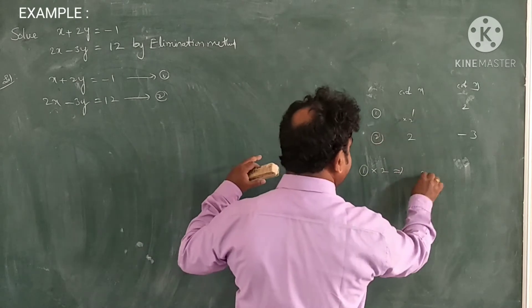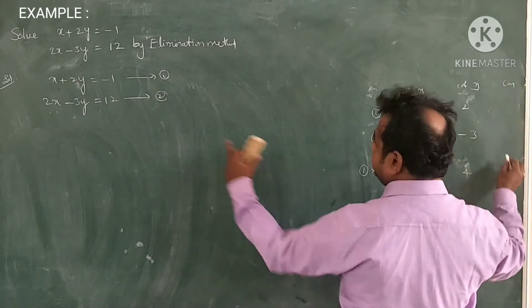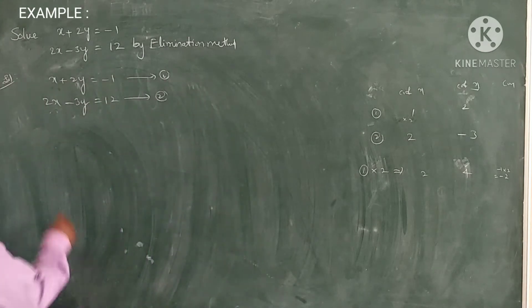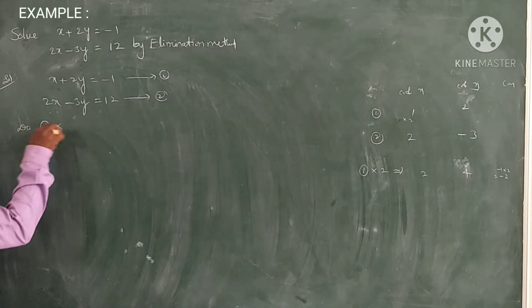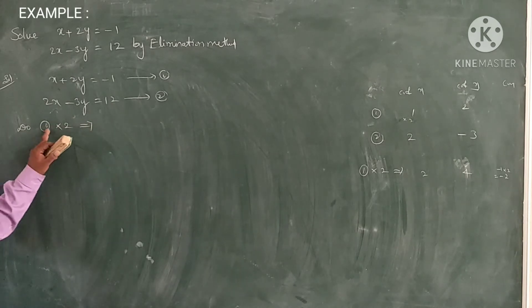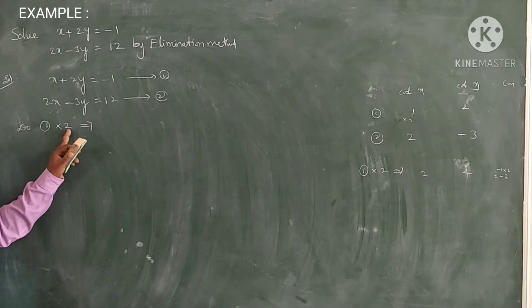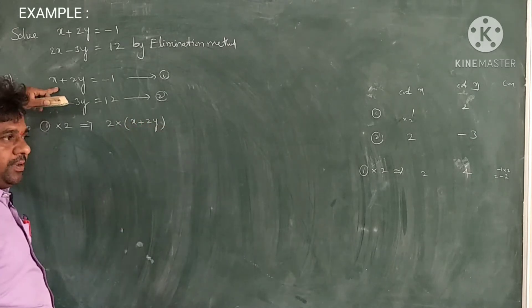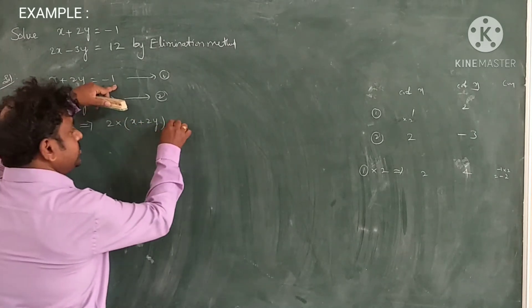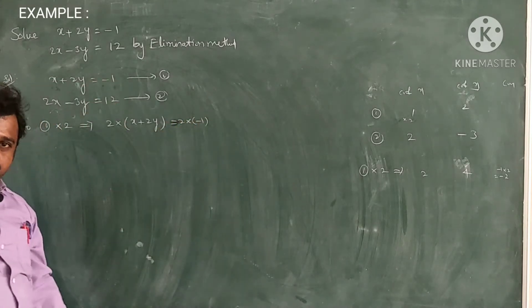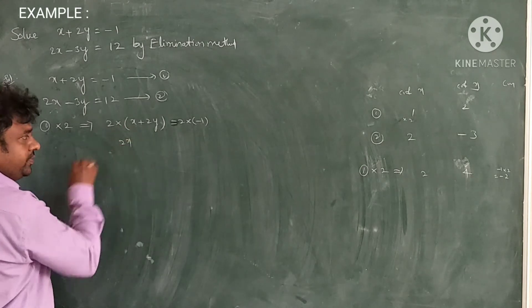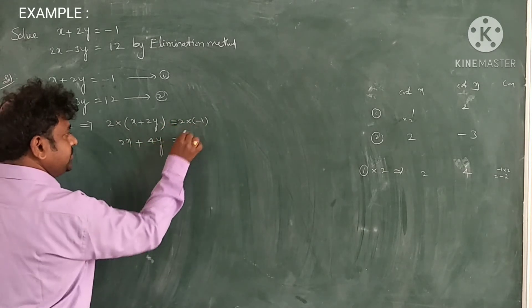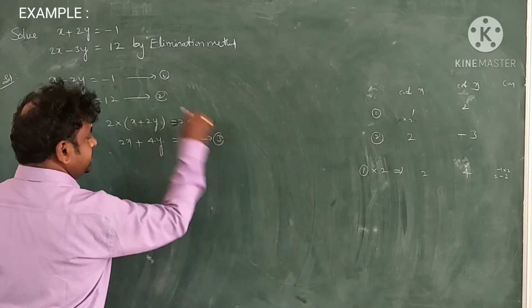Observe here: 1 times 2 is 2; 2 times 2 is 4; and the constant is minus 1, so minus 1 into 2 is equal to minus 2. So, equation 1 multiplied by 2 gives: 2 times equation 1, which is 2 into x plus 2y equals 2 into minus 1. That gives 2x plus 4y is equal to minus 2. Name this as equation 3.